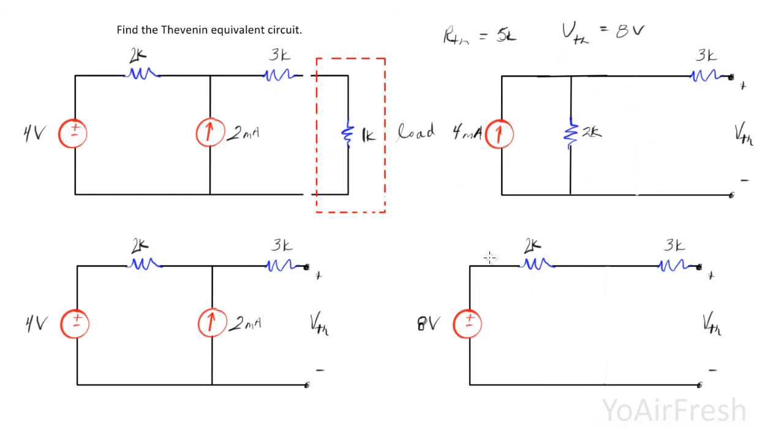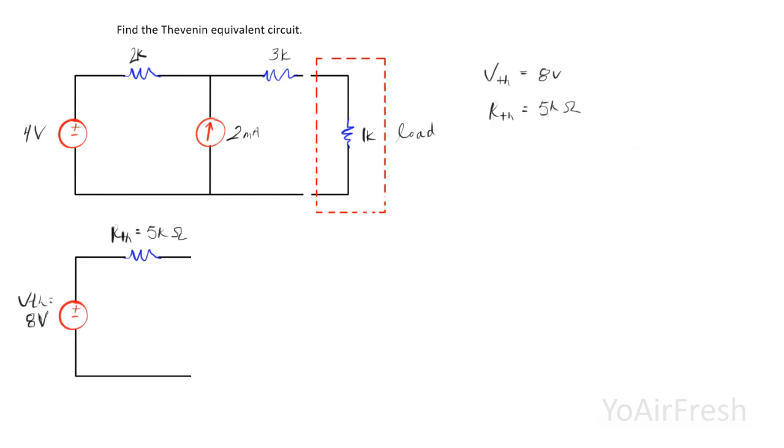And with these, we can now draw our Thevenin equivalent circuit. Okay, so here we have our Thevenin equivalent circuit. So we have V Thevenin 8 volts, our Thevenin resistance is 5,000 ohms. And this is the format if you're asked for the Thevenin equivalent circuit.